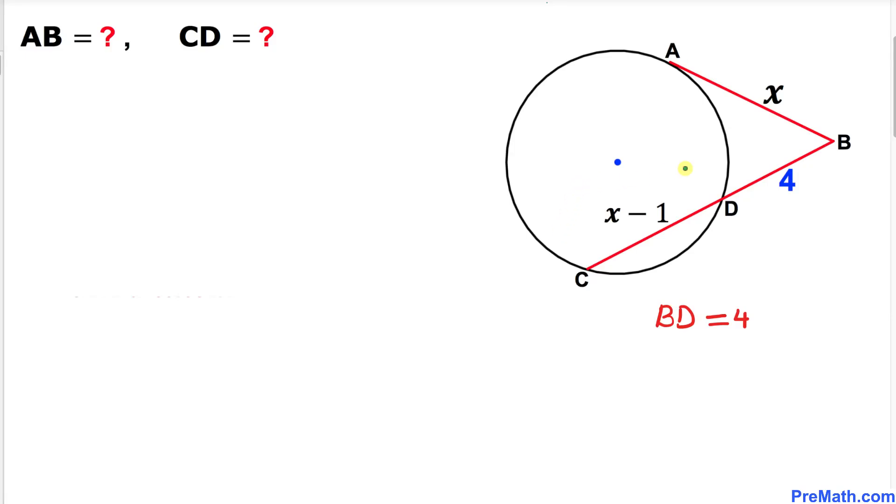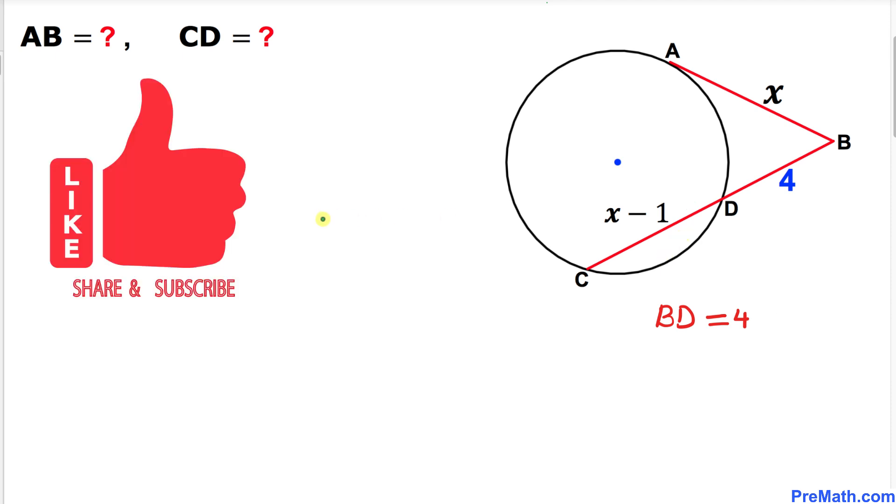Welcome to PreMath. In this video tutorial, we have got this tangent line as well as this secant line as you can see in this figure, such that our side length BD is 4 units. Now we are going to calculate the length of these line segments AB and CD.